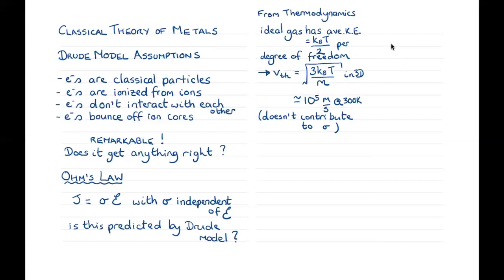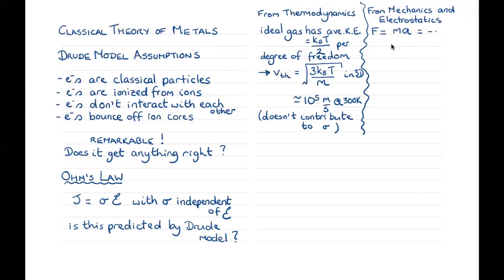The second piece of physics is from Newtonian mechanics and electrostatics. From Newton's laws: force on an electron equals mass times acceleration. From electrostatics: that force equals minus e times the electric field, where the minus sign indicates the electron is negatively charged. So the electron is accelerated by an electric field, with acceleration equal to minus e times the electric field divided by its mass.